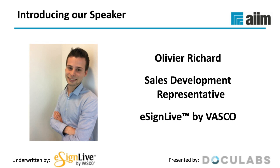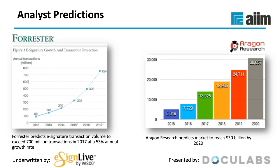Thank you, Richard. Just before starting, I'd like to define what a wet ink signature is — it's really what we see as a typical signature with a pen on paper. E-signatures are clearly not a new technology. Even if you haven't implemented e-signatures at your organization, you've likely e-signed some kind of document — a form, an NDA, or even an employment contract. Some of the earliest implementations we've seen from customers date back to more than 20 years.